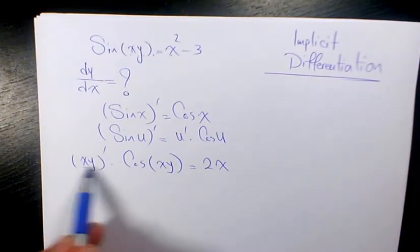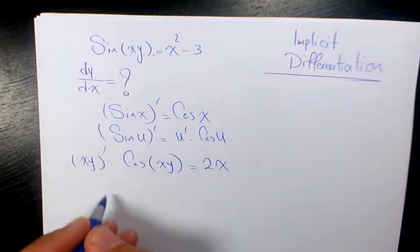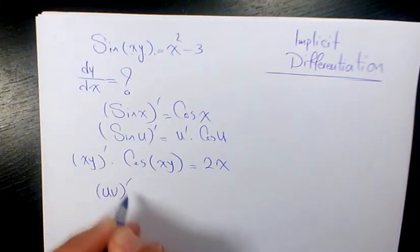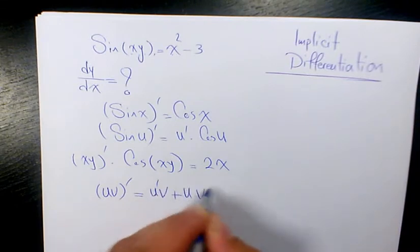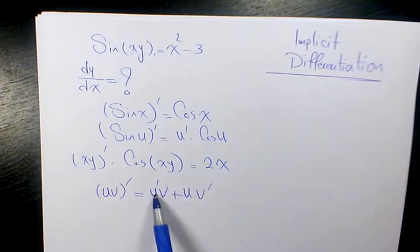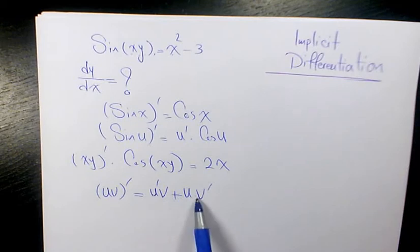So here we need to find the derivative of xy, we need to use product rule. Product rule, u times v is going to be u prime v plus u times v prime. Derivative of u times v plus u times derivative of v.